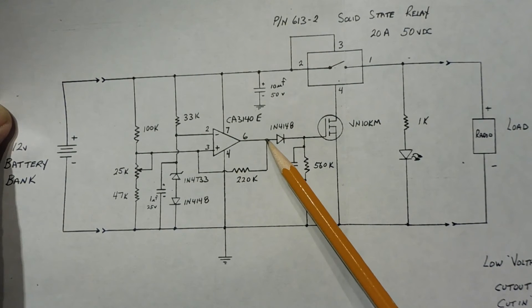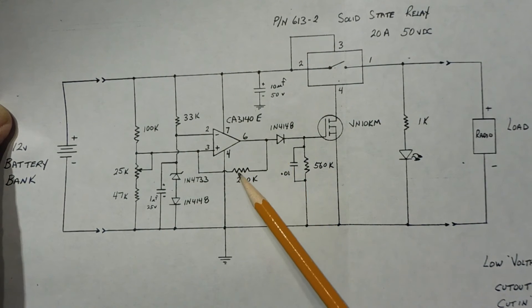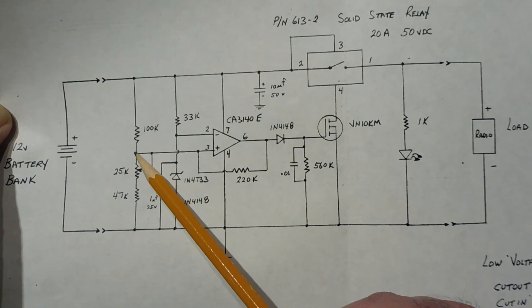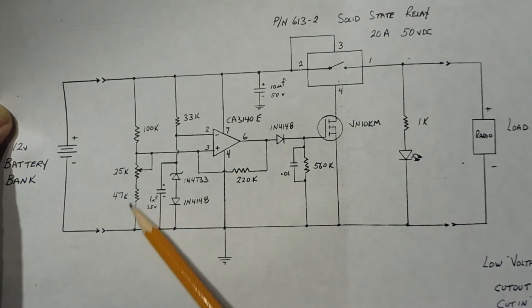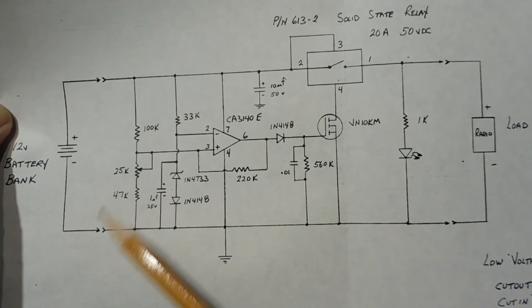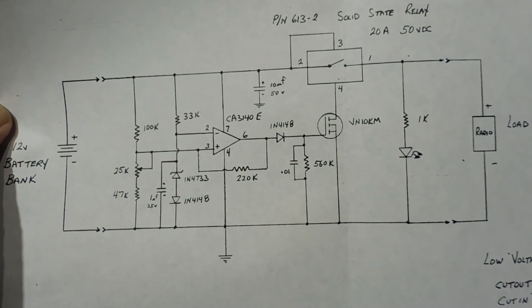So when pin 6 goes low, it's actually grounding this point, so it's actually putting this 220K ohm resistor across this leg of the voltage divider and it's changing the trip point. So that's how we get our hysteresis of our circuit.